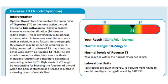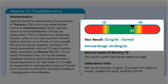This lab uses a range of 10 to 24 nanograms per deciliter, and this person is within the lab range but a little higher than we want to see — a little higher than optimal at 21.